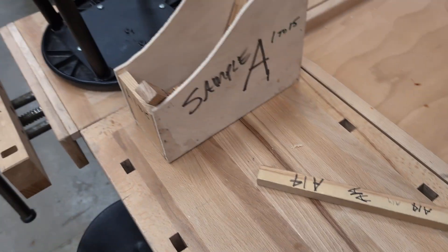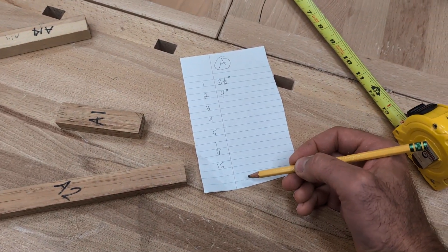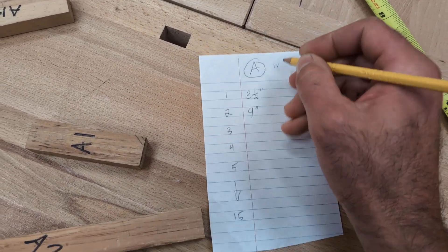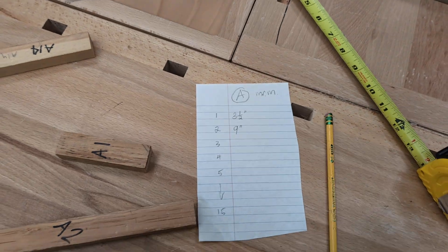You're going to work through this bin sample A until you have all 15 of them written down. Then you'll hand that in. Make sure you put your name on the top. All right, that's how you do measuring assignment A.